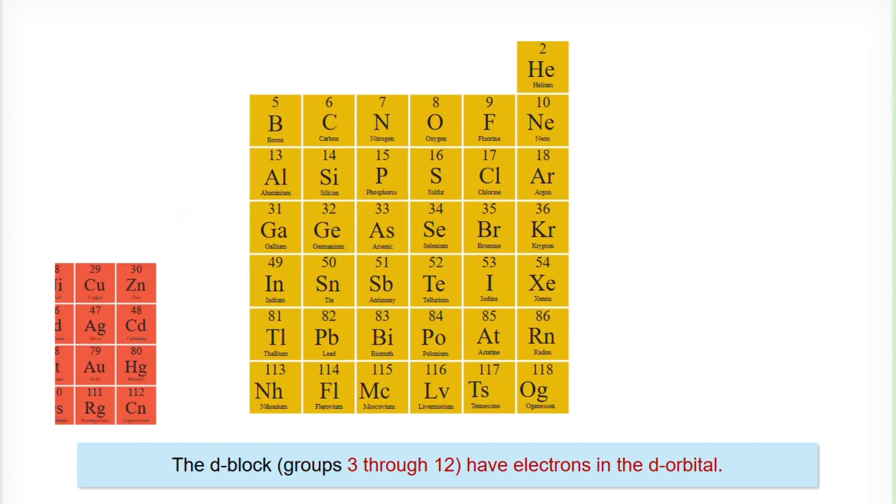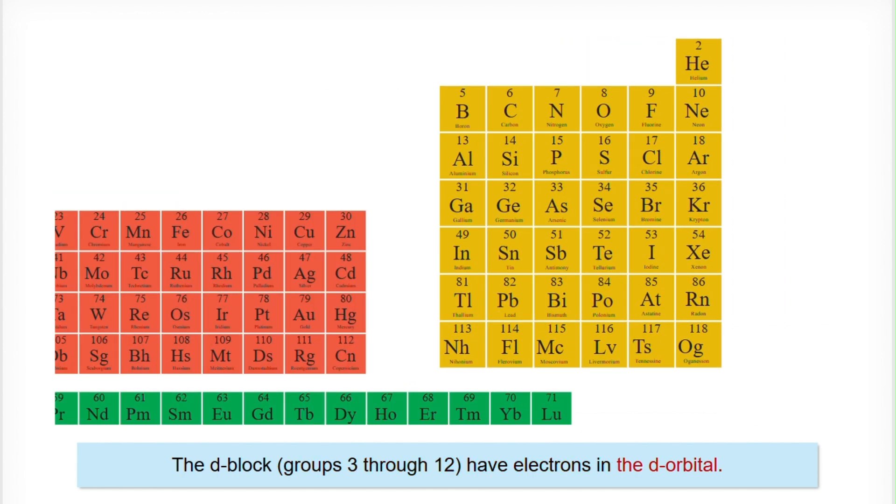The D block, groups 3 through 12 have electrons in the D orbital.